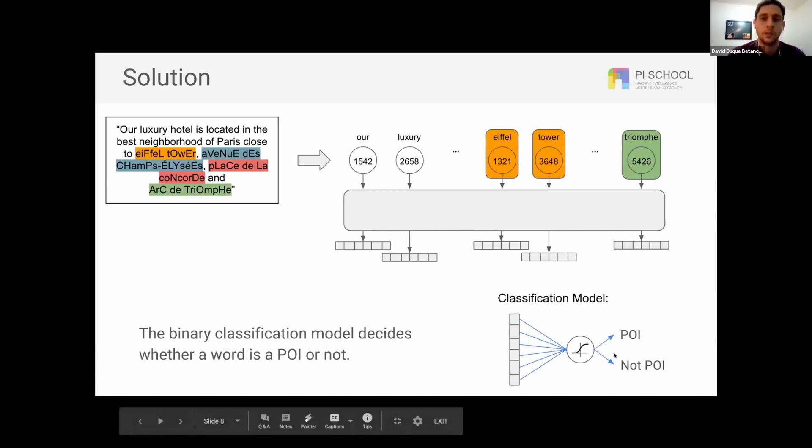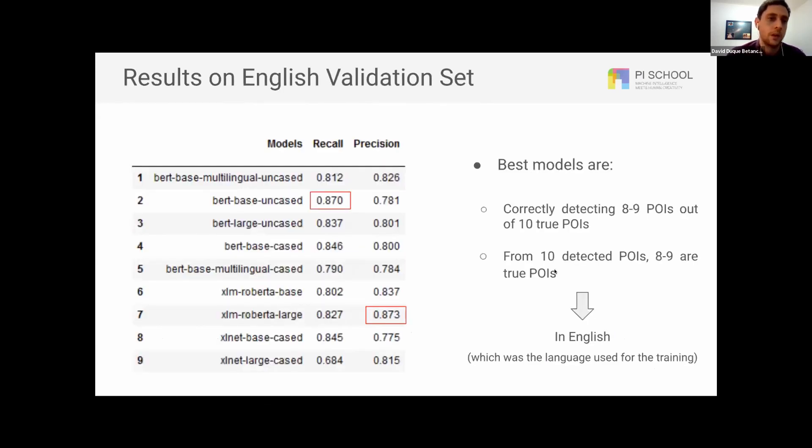So let's see the results. As I mentioned, we have trained our model only using English text. So if we assess this model into unseen English sentences, we get from, for some models, very good results. We get pretty high recall and pretty high precision.